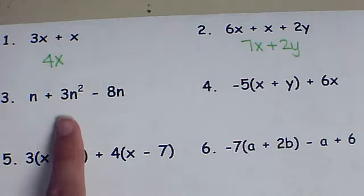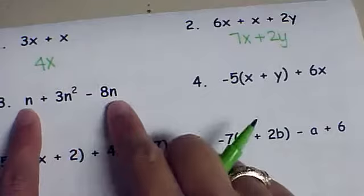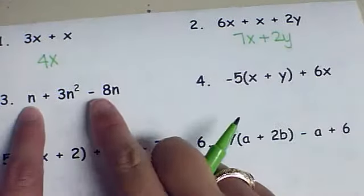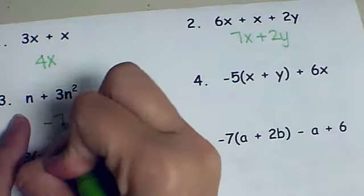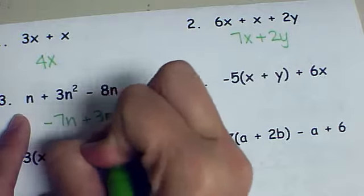On this one I have n, n² and n. The n's are alike, the n² is not alike. So I have n - 8n which is negative 7n plus 3n².